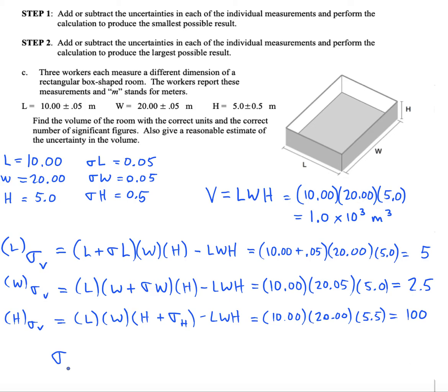And to do it, we're going to use what's called quadrature. This is where we take each of the uncertainties that we had found and square them. And then we take the square root of the sum of the squares. I get 100.2 meters cubed.